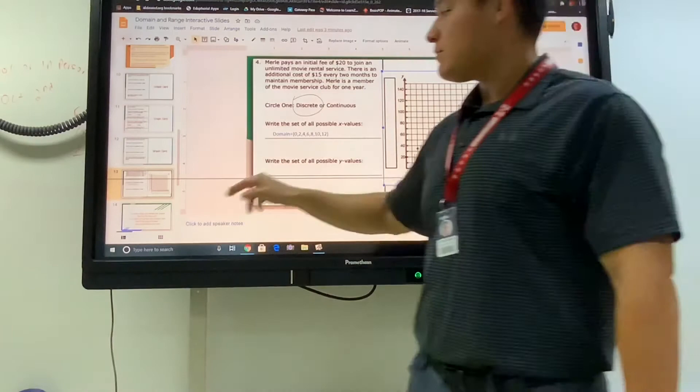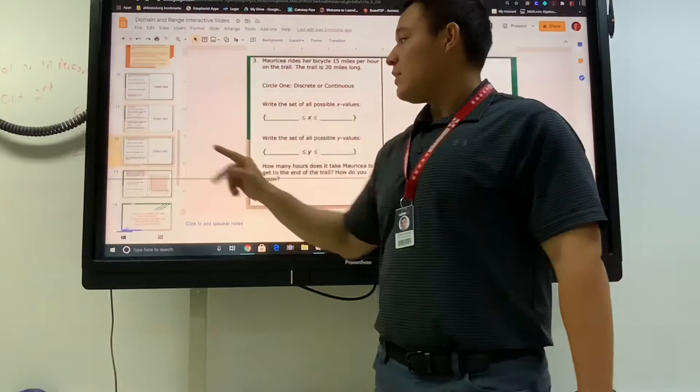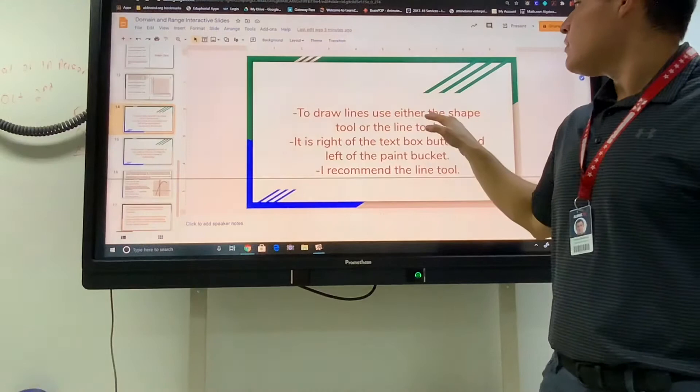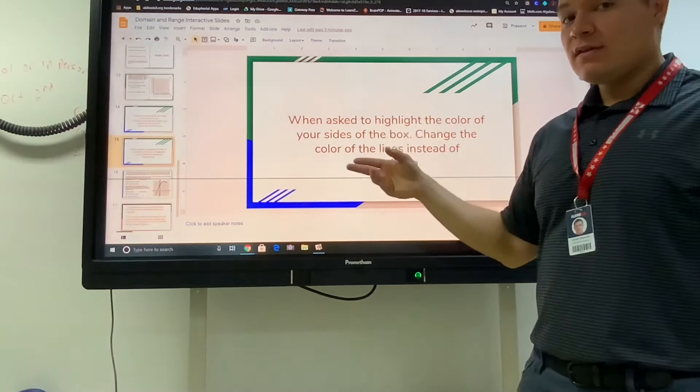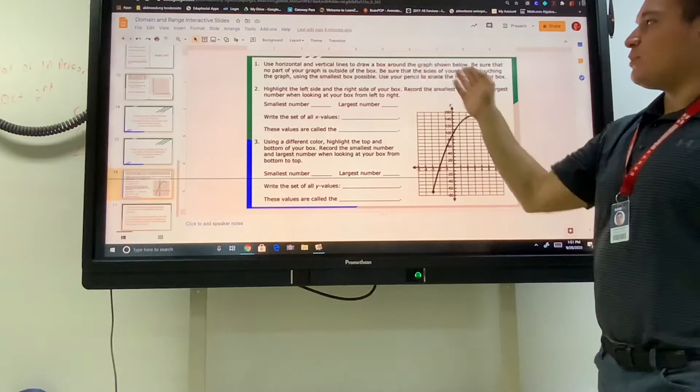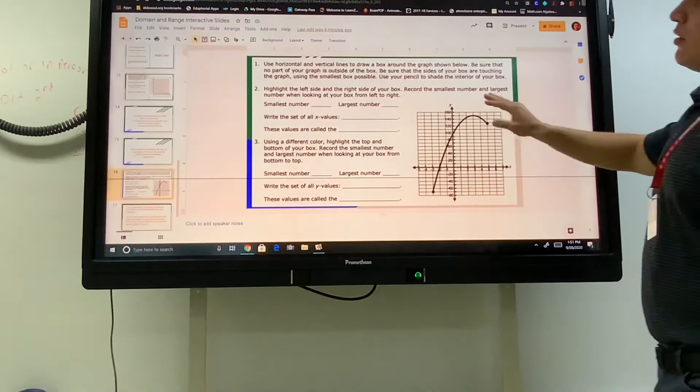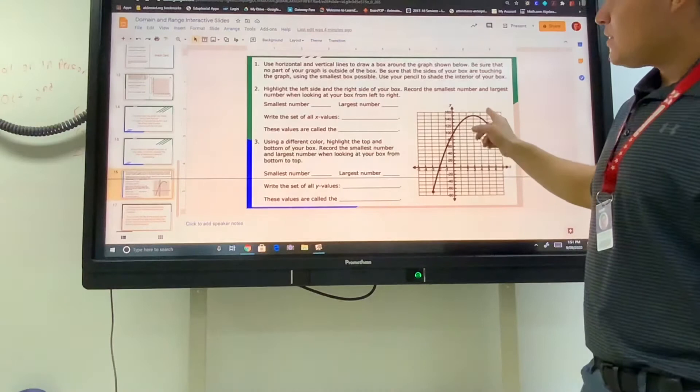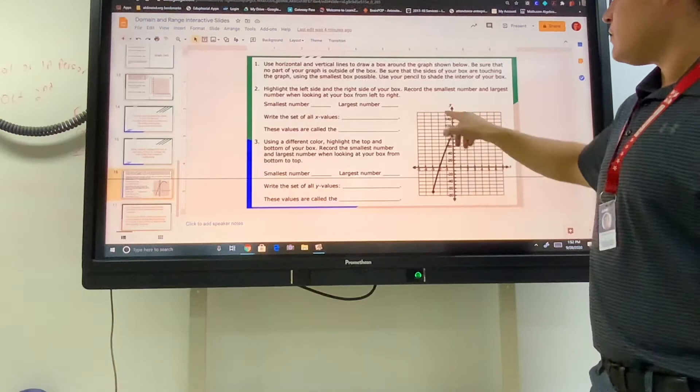I need you to do number 1, 2, and 3 on your own. This next part of the lesson wants you to draw lines. It's also going to ask you to highlight different sides of this shape, so change the color to match. And here's what that means: it says use horizontal and vertical lines to draw a box around the graph. Not everything, but we want to make sure that no part of this graph, of this curve, is outside of our box. So we're going to draw a box directly around this curve.